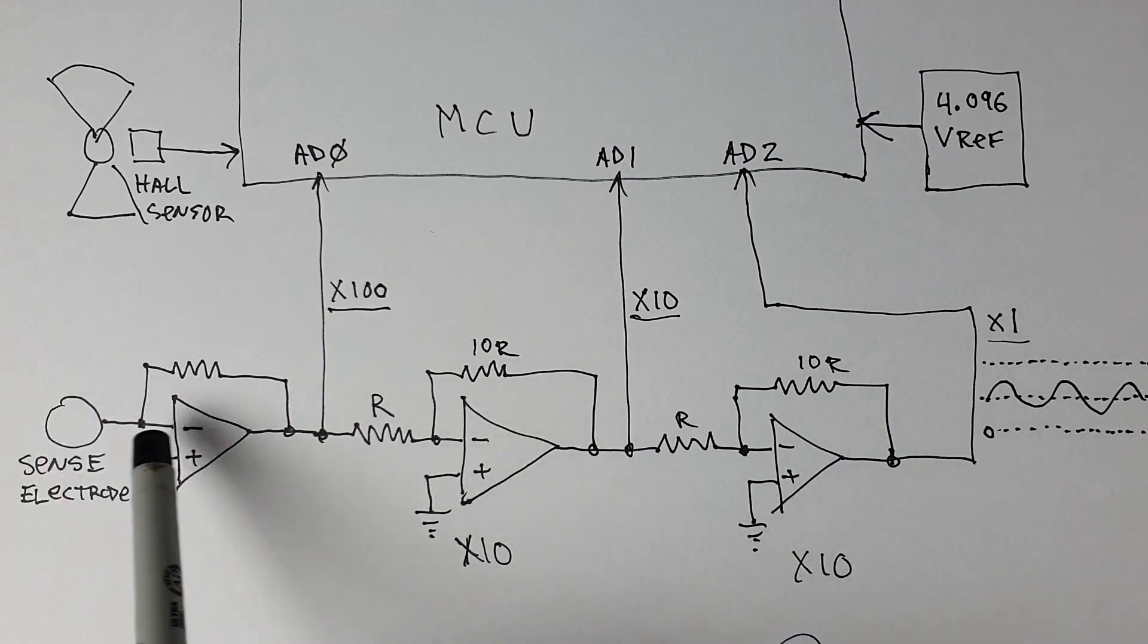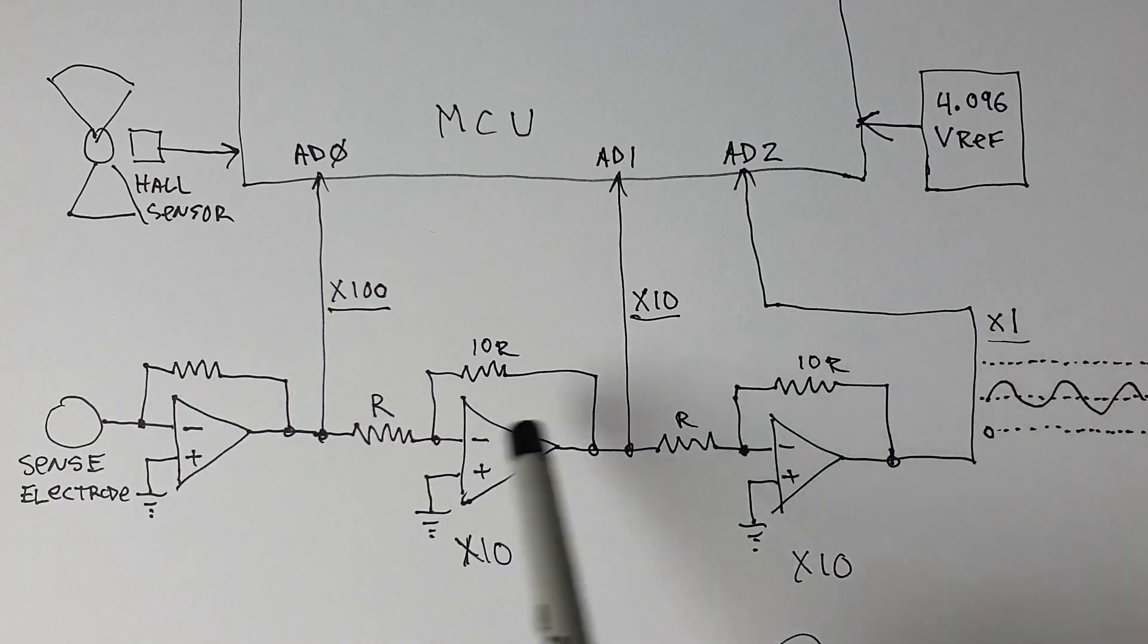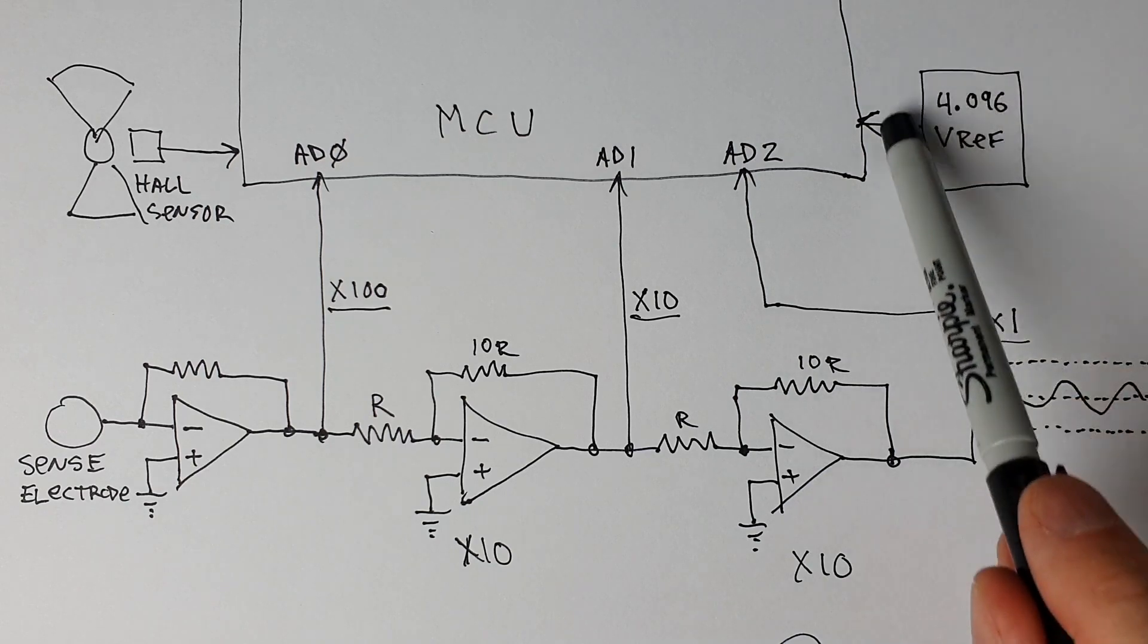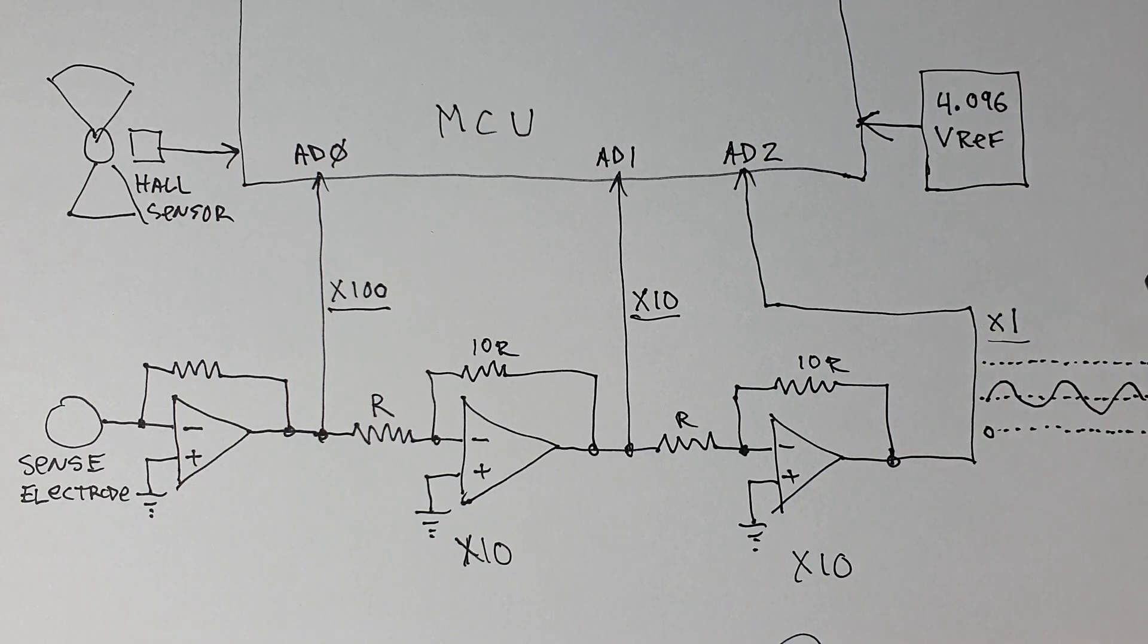So this whole signal chain has the DC nominal level centered around half of this voltage. So around two volts is what the signal rides on. So we try to keep the signal obviously centered between the rails or the 4.096 reference voltage so it's valid.